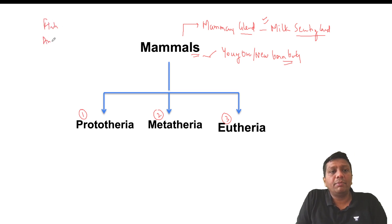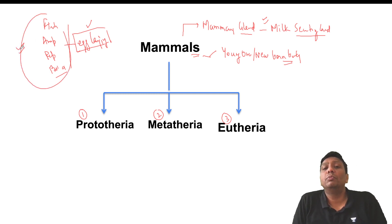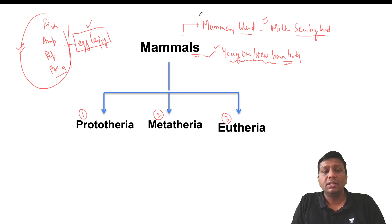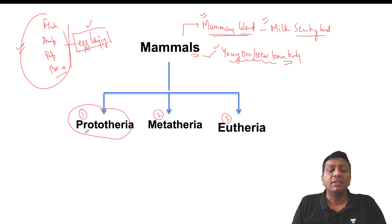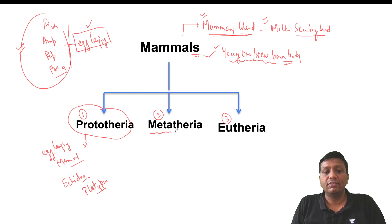Mammals are divided into three groups: Prototheria, Metatheria, and Eutheria. Prototheria are the egg-laying mammals — the exceptions. Examples are echidna and platypus. These are the only mammals that lay eggs instead of giving birth to live young, and UPSC has asked questions about these egg-laying mammals.